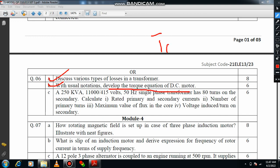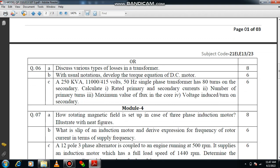With the usual notation develop the torque equation. You have to develop the torque equation: TA equals 0.159 times phi times Z times P times IA by A. This equation you are supposed to derive. Then the transformer: there is a problem related to transformer. You need to know the transformer EMF equation and equation for transformation ratio. If you know these, you can solve this problem very easily.